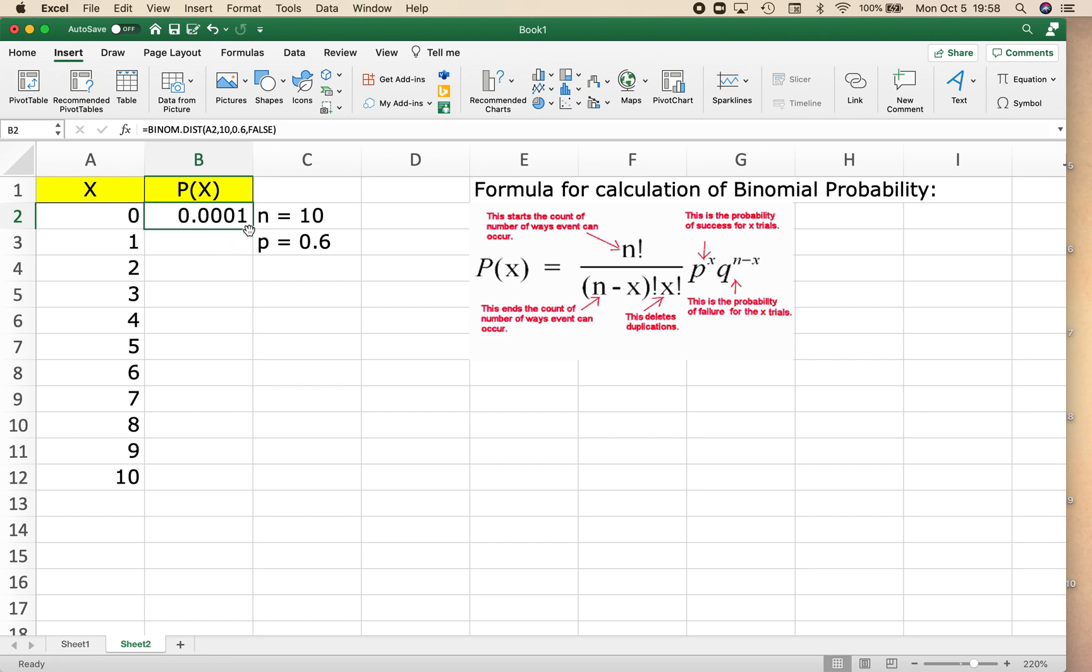So right now, looking at the plus sign, it's a thick white one. I want to see it change into a black plus. Once it changes into the black plus, I'm going to click and drag down to the bottom of my table.